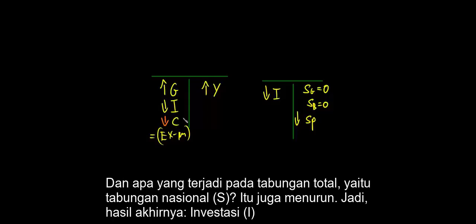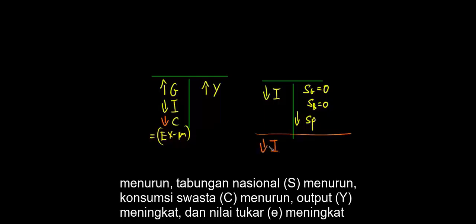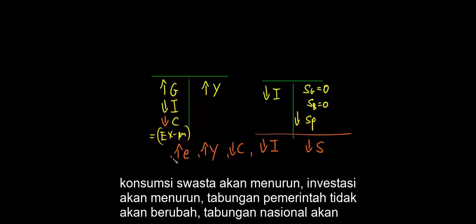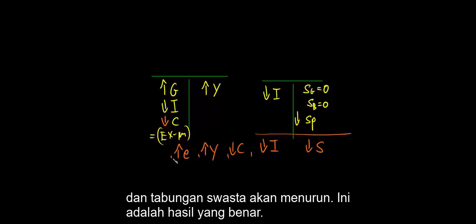Through the capital account analysis, we learn that private consumption in the economy is small, and national savings are also small. The final results are: I is small, S is small, C is small, and the exchange rate depreciates. Output will increase, the exchange rate will depreciate, the interest rate will rise, private consumption will decrease, investments will decrease, government savings will not change, national savings are small, and personal savings will decrease. These are the correct results.